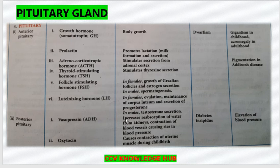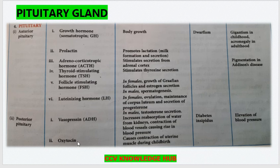Vasopressin, also called ADH, increases reabsorption of water from the kidneys as well as contraction of blood vessels, causing a rise in blood pressure. Its under-secretion causes diabetes insipidus, and over-secretion causes elevation of blood pressure, i.e. hypertension. The other hormone is oxytocin, which causes contraction of uterine muscle during childbirth.